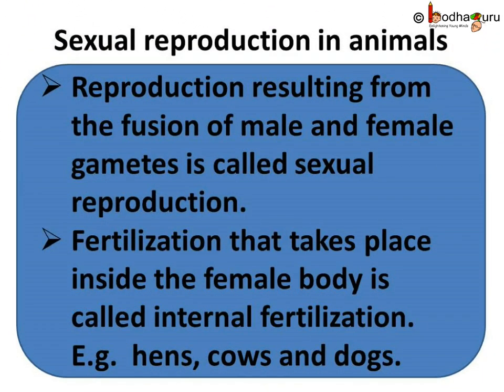So to sum up what we learnt today: we learnt about sexual reproduction in animals. Reproduction resulting from the fusion of male and female gametes is called sexual reproduction. Fertilization that takes place inside the female body is called internal fertilization — for example, in hens, cows, dogs, etc.